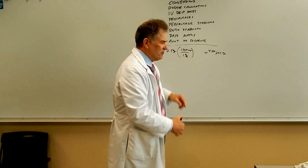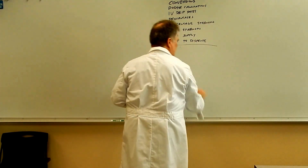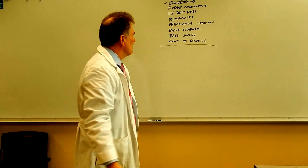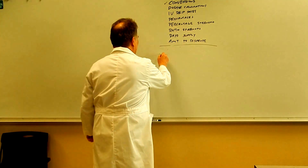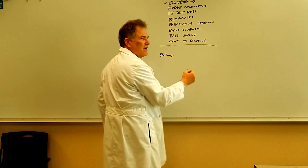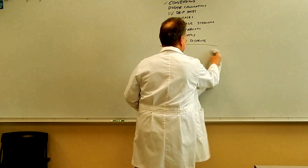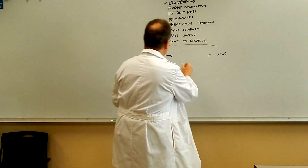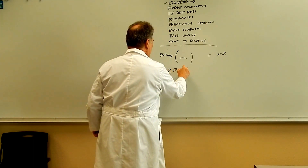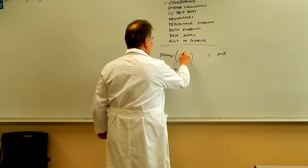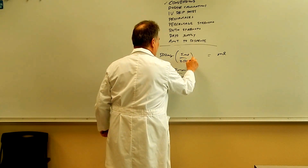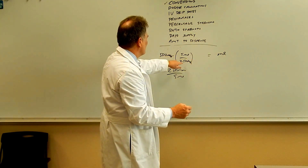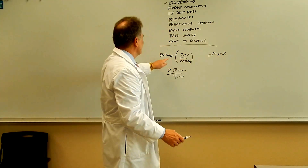For a dosage calculation, let's use amoxicillin 250 milligrams per five mLs. The doctor prescribed 500 milligrams, and you want to know how many mLs to dispense. The ratio is 250 milligrams per five mLs, so we put five mLs on top and 250 milligrams on the bottom — this equals one. Milligrams cancel, and 500 times five divided by 250 equals 10 mLs. Units of the answer, the given, and the ratio.